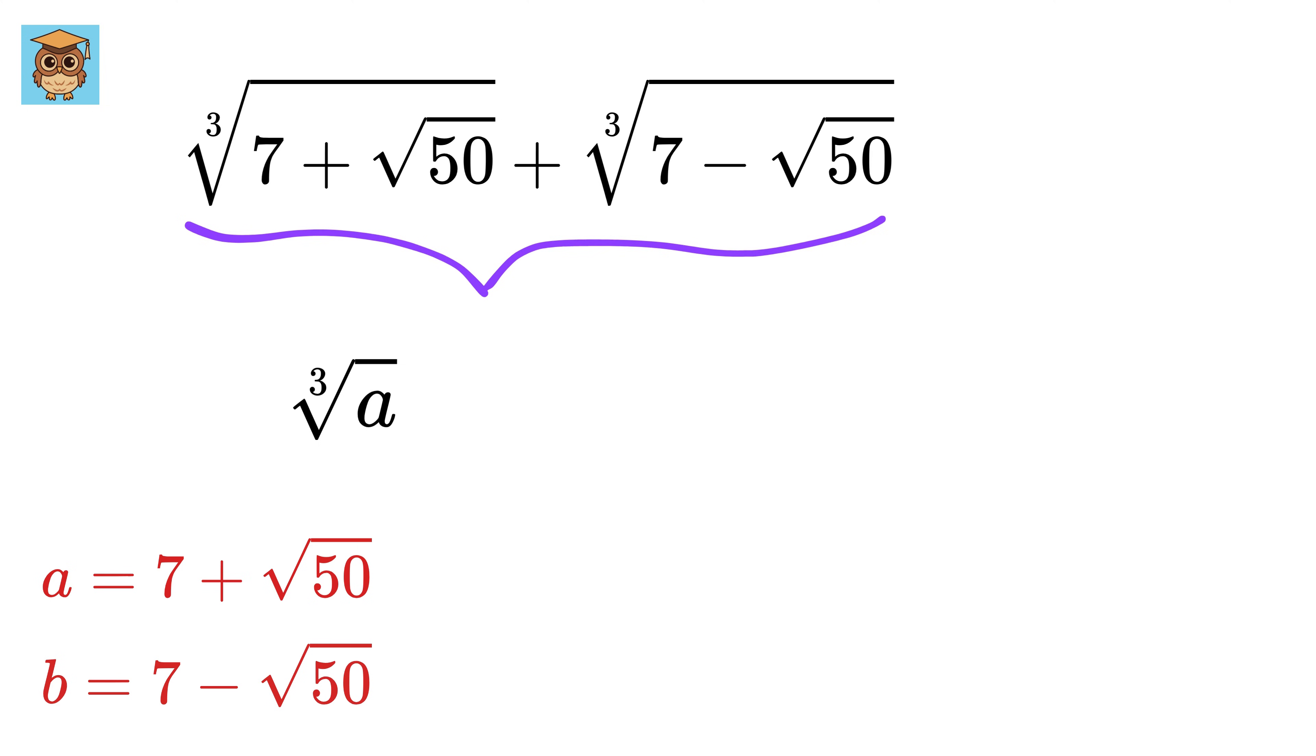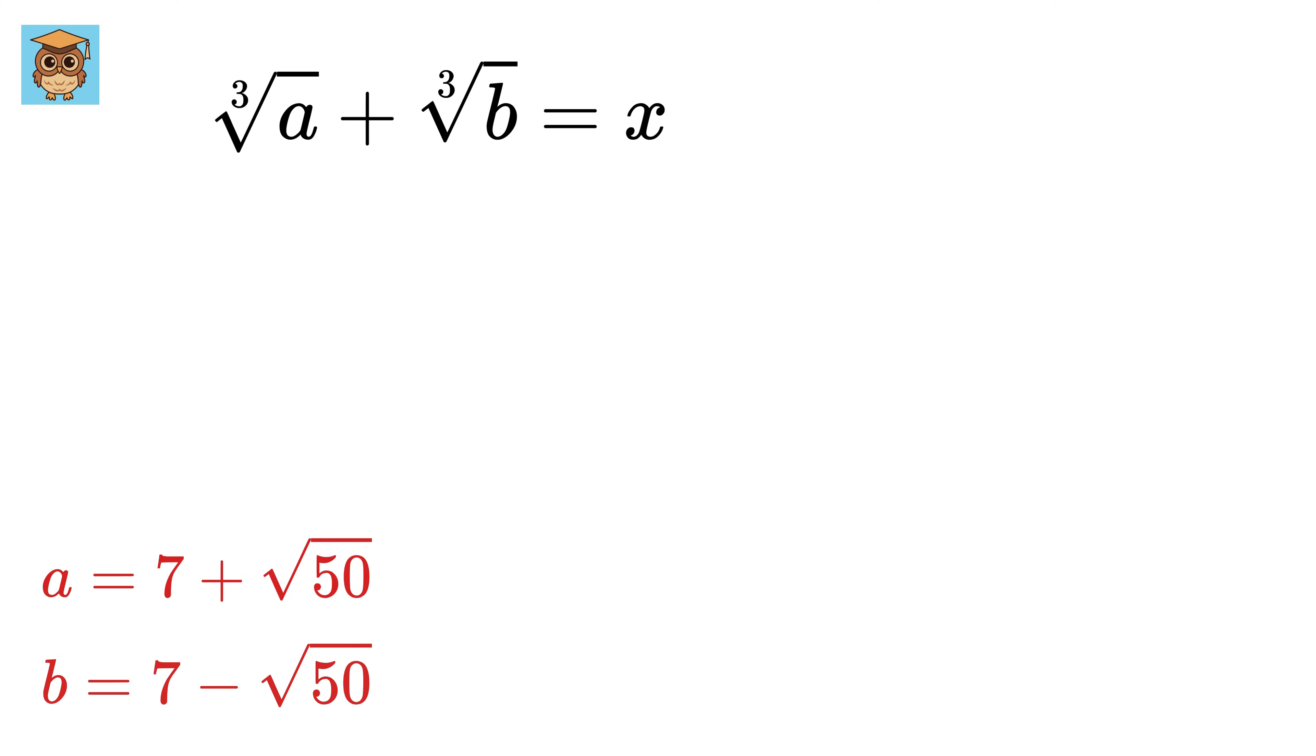Write this as the cube root of A plus the cube root of B, and let us call this sum as X. Now cube both sides to get this. We know that A plus B whole cube is given by this formula.